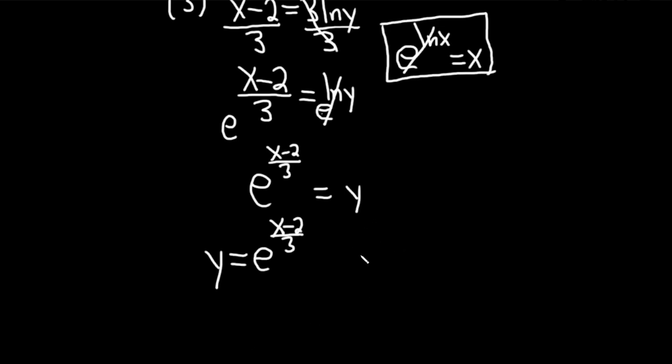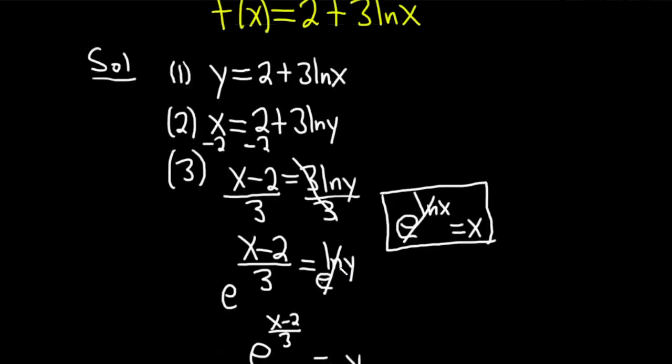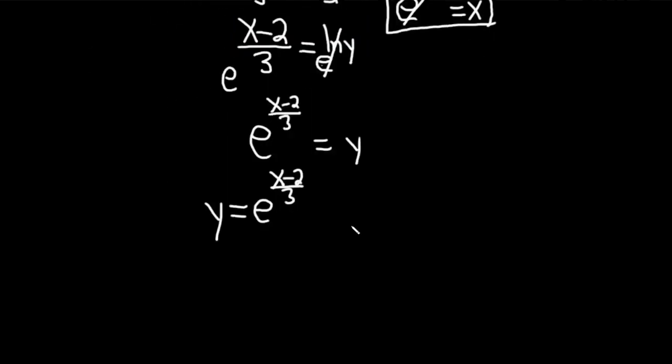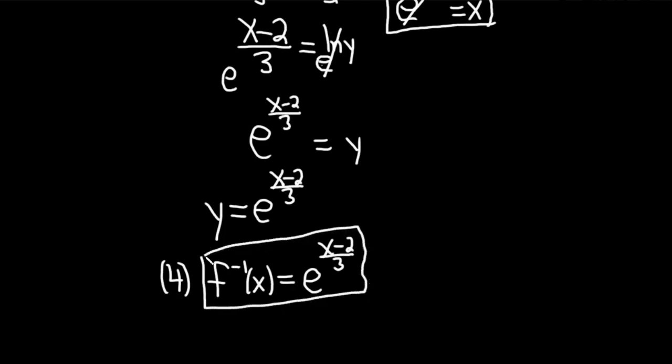Very nice. And the fourth step is to write the answer using the proper notation. So our original function was f of x. So we want to write it using the inverse notation, which is f inverse of x. Basically, you replace the y with this notation here. And this is e to the x minus 2 all divided by 3. And so this would be the answer to this problem. This would be the inverse function.